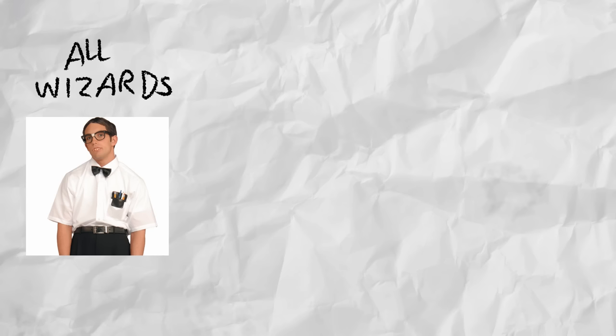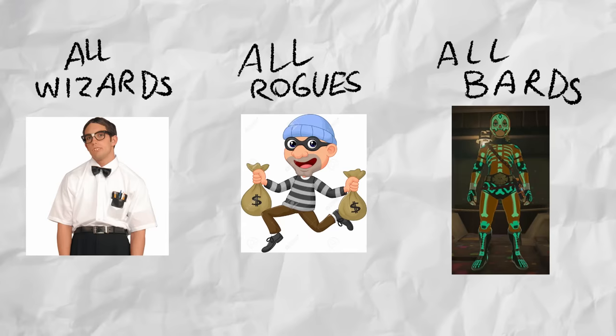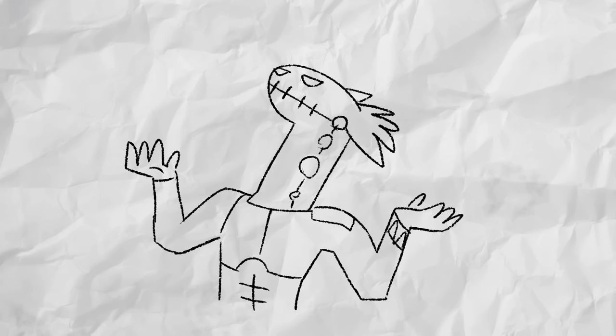All wizards are smart-ass eggheads, all rogues are kleptomaniacs, and all bards are lust-compelled sex deviants. It's just the rules, I don't make them.